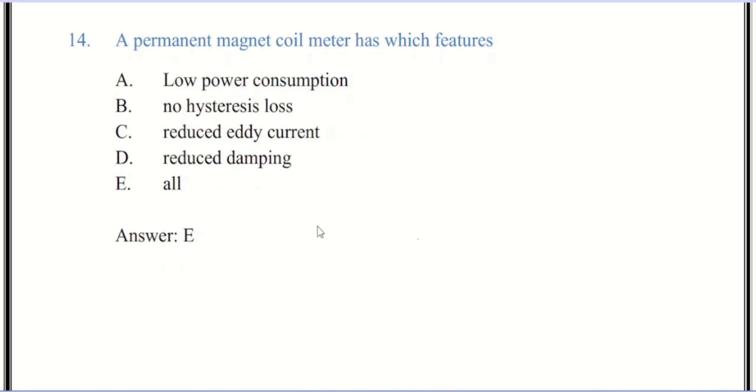Now we come to question number 14. A permanent magnetic coil meter has which features? The correct answer is E, all of the above. The scale of the PMMC instrument is evenly divided. The power consumption is very less. The PMMC instruments have high accuracy because of high torque-to-weight ratio. The single device measures different range of voltage and current by use of multipliers and shunts. The PMMC instrument uses self-shielding magnet which is useful for aerospace applications.